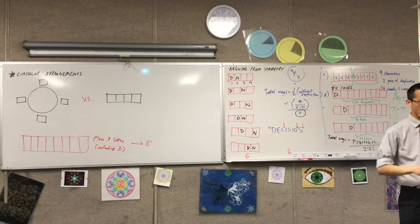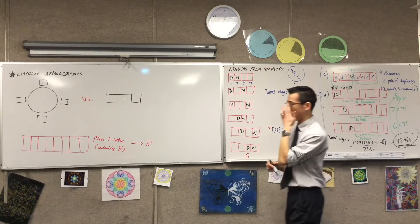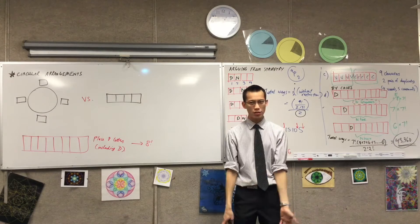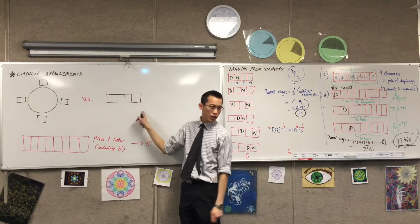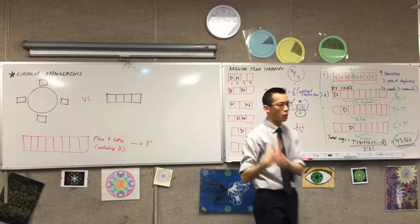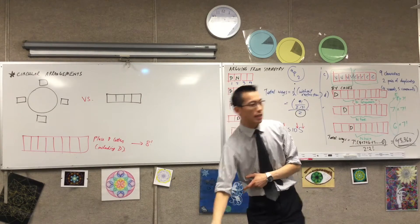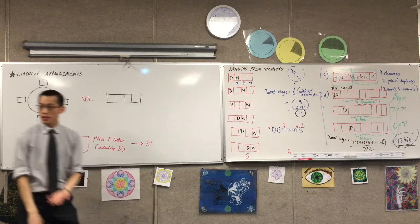Circular arrangements are a particular subset of questions you'll get in combs, and it's really just one trick which I want you to understand conceptually. Let's have a look at a normal situation. Just arranging, for instance, let's go with four because it's nice and easy, you're arranging four things in four spots.